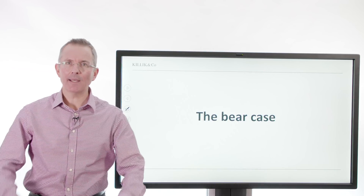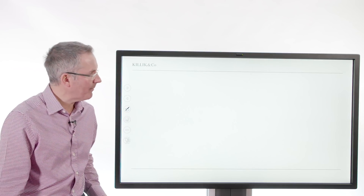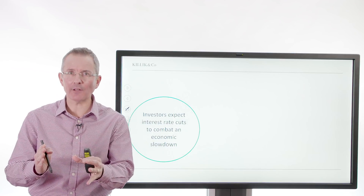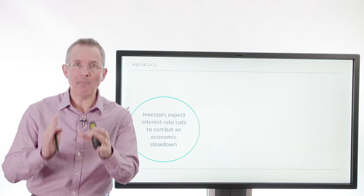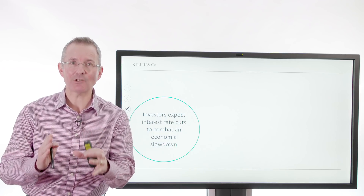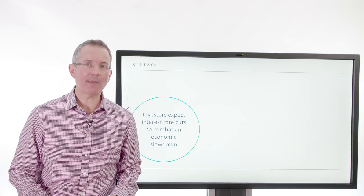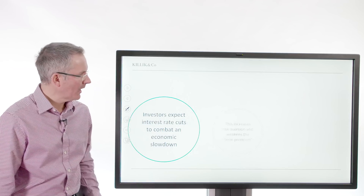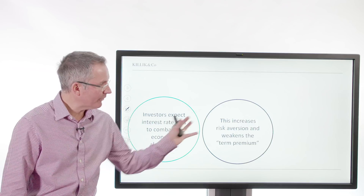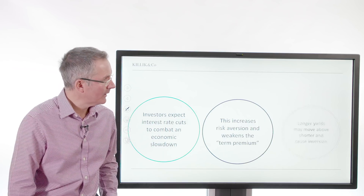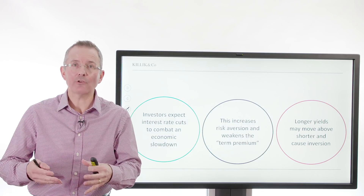Bears would say: if the yield curve starts to invert, if spreads compress and even go negative, what does that mean? The bear case says investors suddenly think the Federal Reserve looks like it's going to be raising rates into the future. Maybe if things are going badly, it'll actually cut them. And if that happens, suddenly there's a reversal in the way people think about the term premium. Why would they cut rates? To head off an economic slowdown. That's the point. So risk aversion weakens the term premium, and longer yields may move below shorter yields and cause inversion.